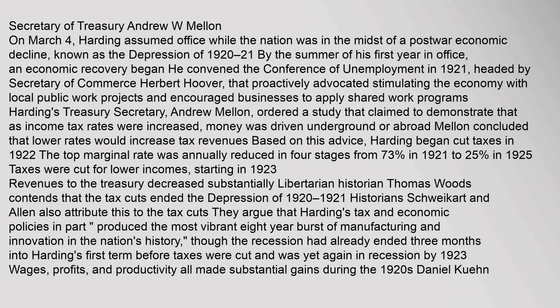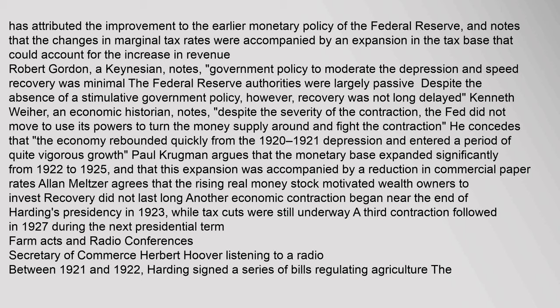Mellon concluded that lower rates would increase tax revenues. Based on this advice, Harding began to cut taxes in 1922. The top marginal rate was annually reduced in four stages from 73% in 1921 to 25% in 1925. Taxes were also cut for lower incomes, starting in 1923. Libertarian historian Thomas Woods contends that the tax cuts ended the Depression of 1920–21. Some historians attribute the improvement to the earlier monetary policy of the Federal Reserve, and note that changes in marginal tax rates were accompanied by an expansion in the tax base.